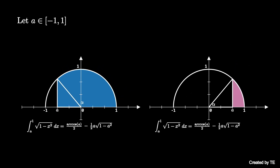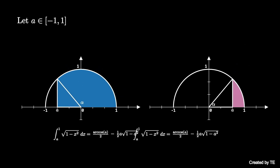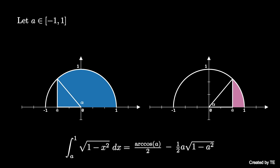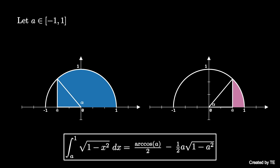So in either of these two cases, the integral that we want is given by the arc cosine of a over 2 minus 1 half a times the square root of 1 minus a squared.